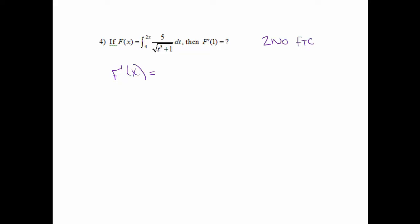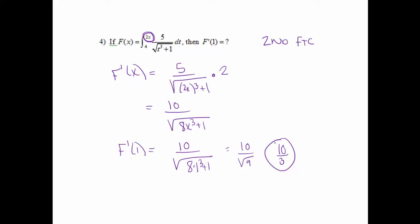So again, what's going to happen? The integral and the derivative cancel each other out. However, we do need to change our variables. So we're going to, wherever we see a t, we're going to put a 2x. So this will be 2x cubed plus 1. And then I do have to multiply by the derivative of the 2x because we do have to use the chain rule on this one. Okay, so this will equal 10 over the cube root. So 2x cubed will actually be 8x cubed plus 1 because both the 2 and the x get multiplied. And then they asked us to find the derivative at 1. So if we're finding the derivative at 1, we're just now going to plug in 1 for our x value. And when we do that, we'll end up with 10 over the square root of 9, which reduces to 10 thirds.